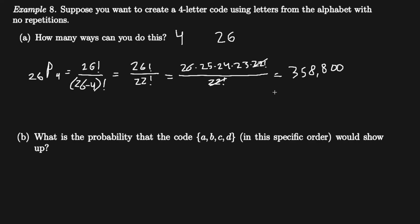For part (b), what is the probability that the specific code a-b-c-d appears? Out of 358,800 possible codes, the sequence a-b-c-d would only show up once. So the probability is 1 out of 358,800, which is less than one percent.